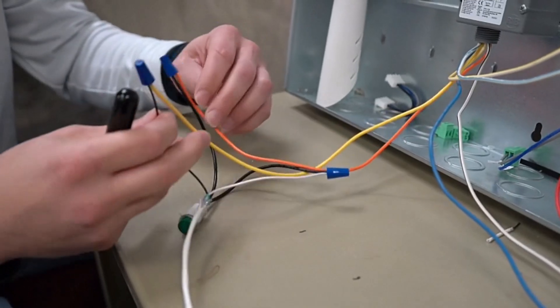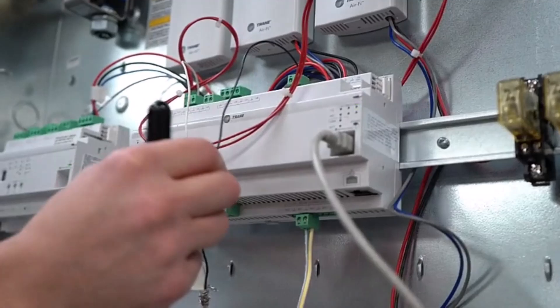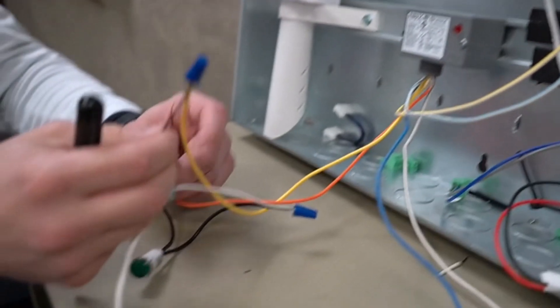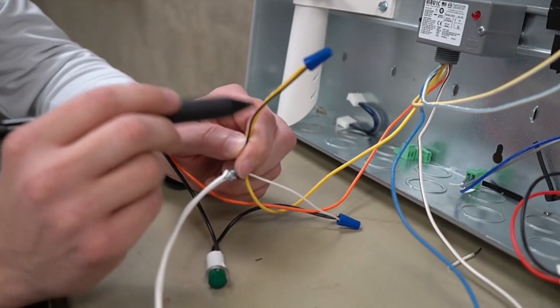On the other one here, we have the 24 volts DC right here, our black wire, going to our common of our yellow wire for our actual relay output here.